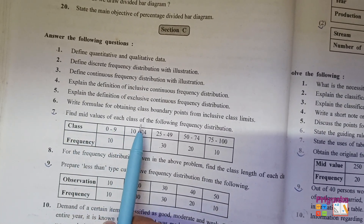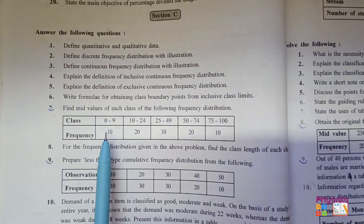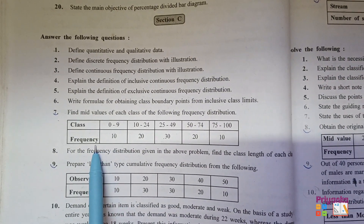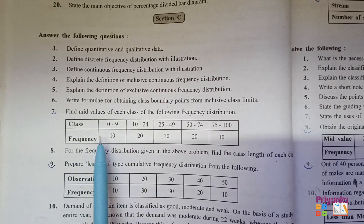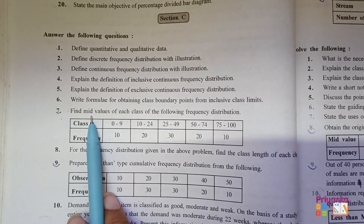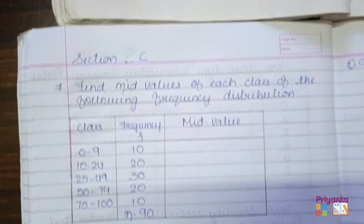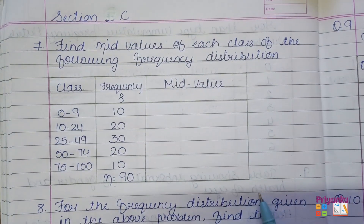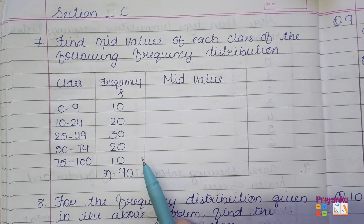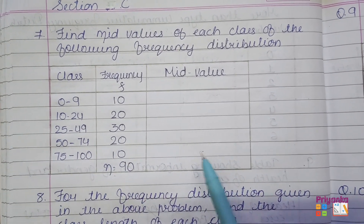Find the mid value of each class of the following frequency distribution. As you can see, the class is given and the frequency is also available. Out of this information, they ask you to find out the mid value. I just took the table information from the question and out of this information I am going to find out the mid value.